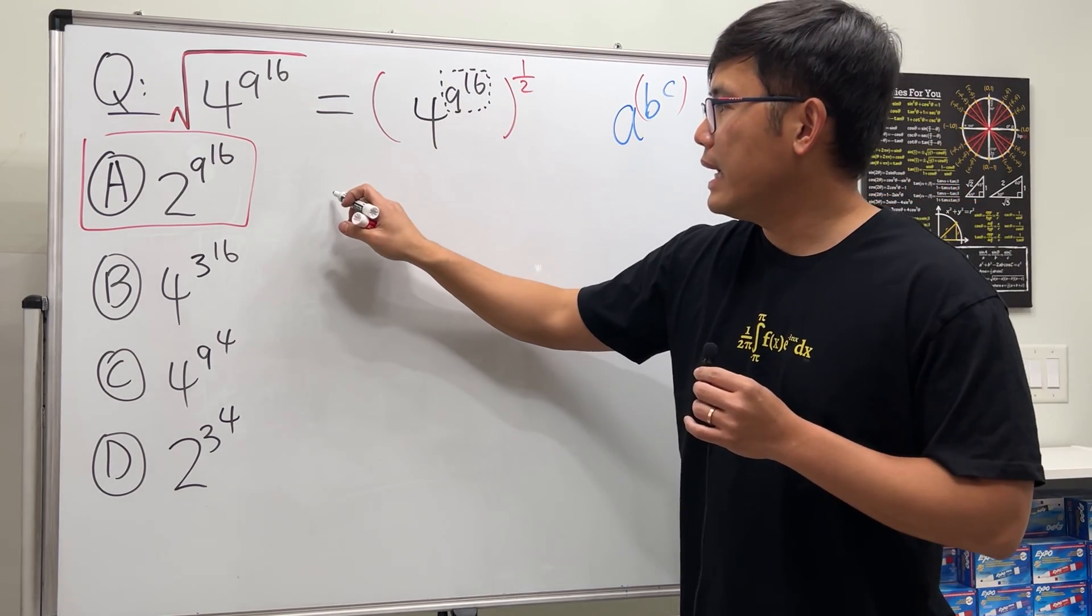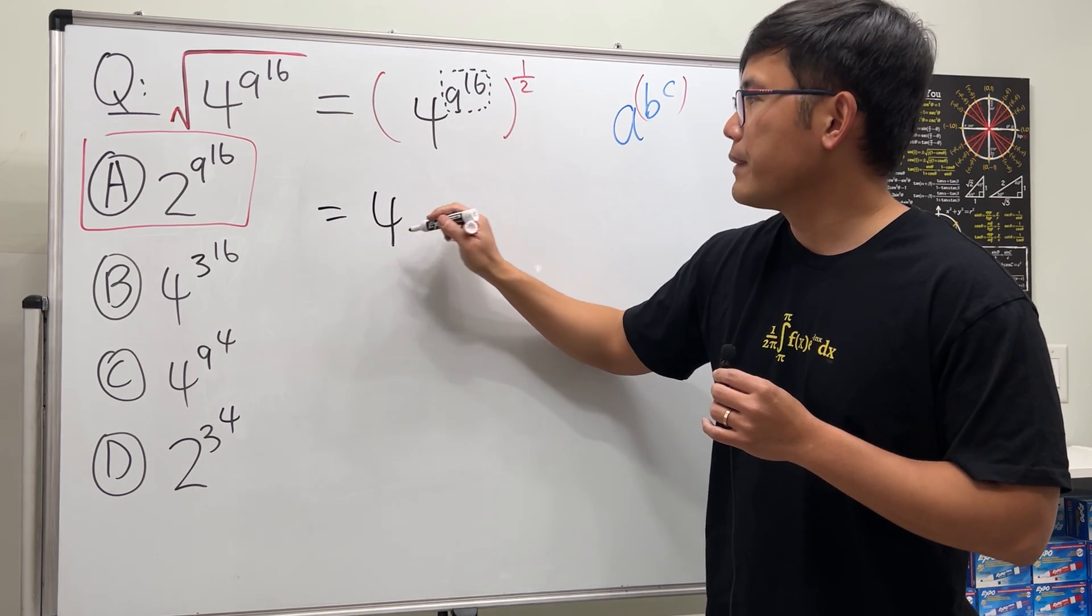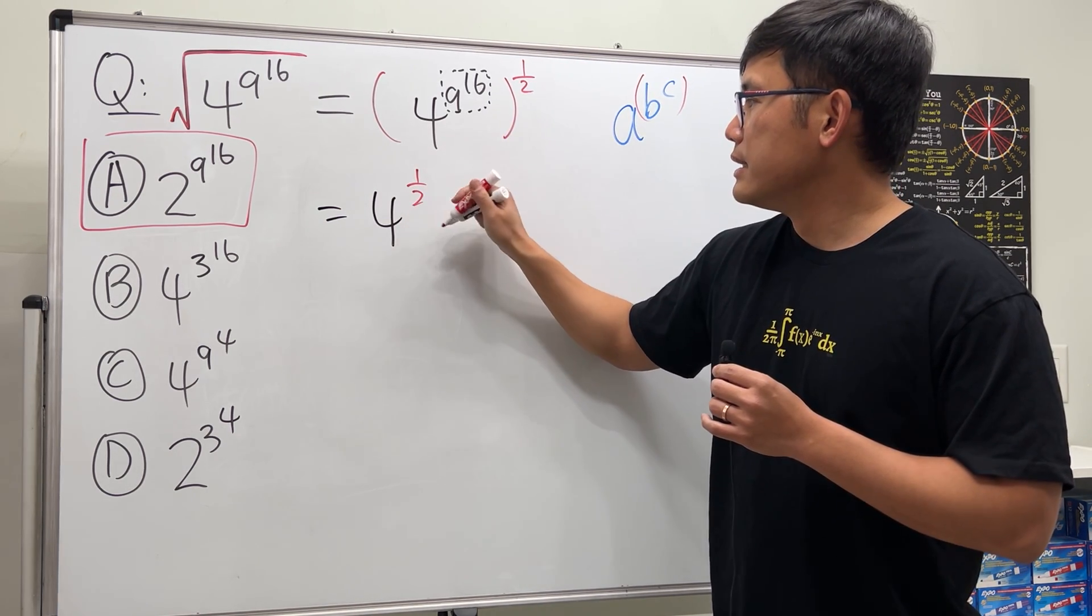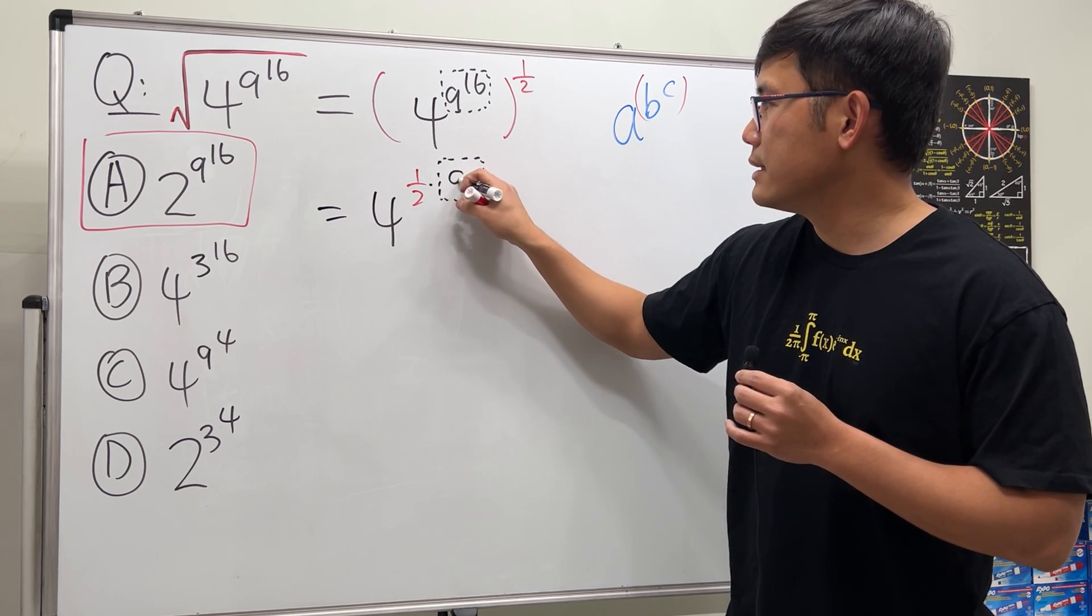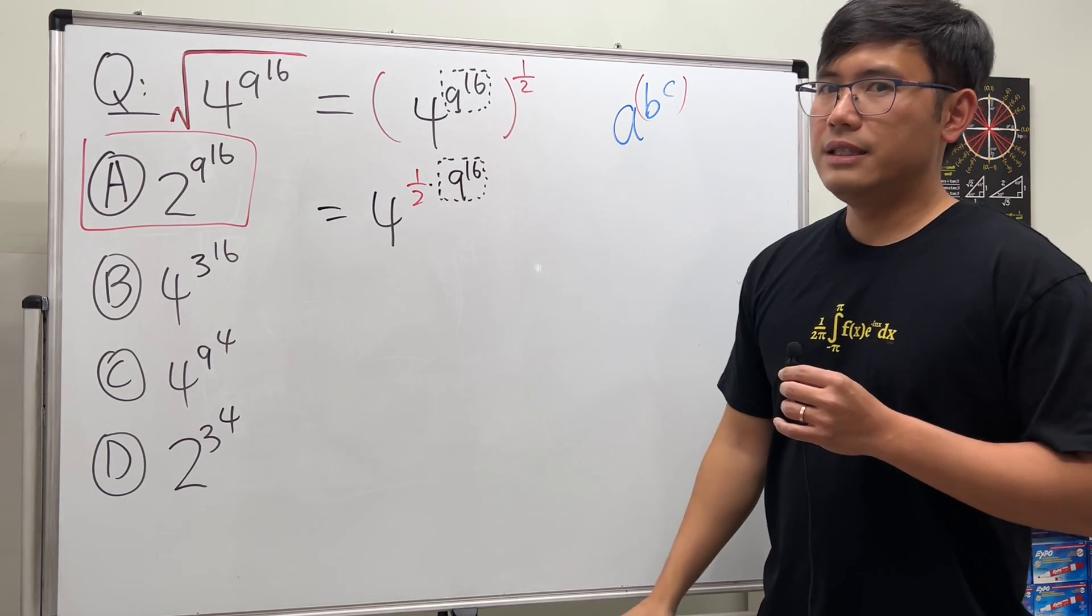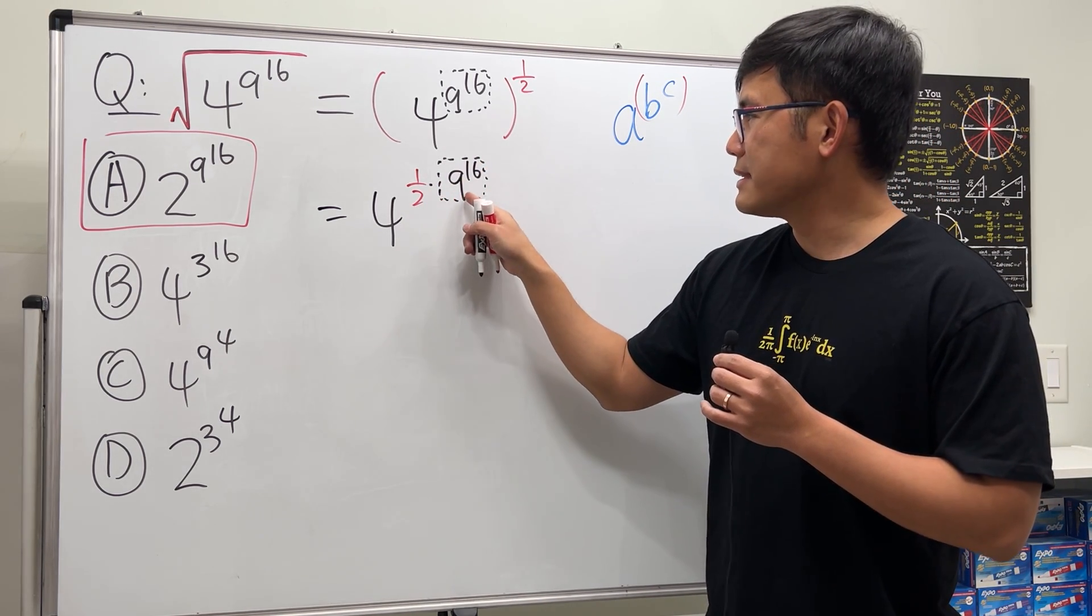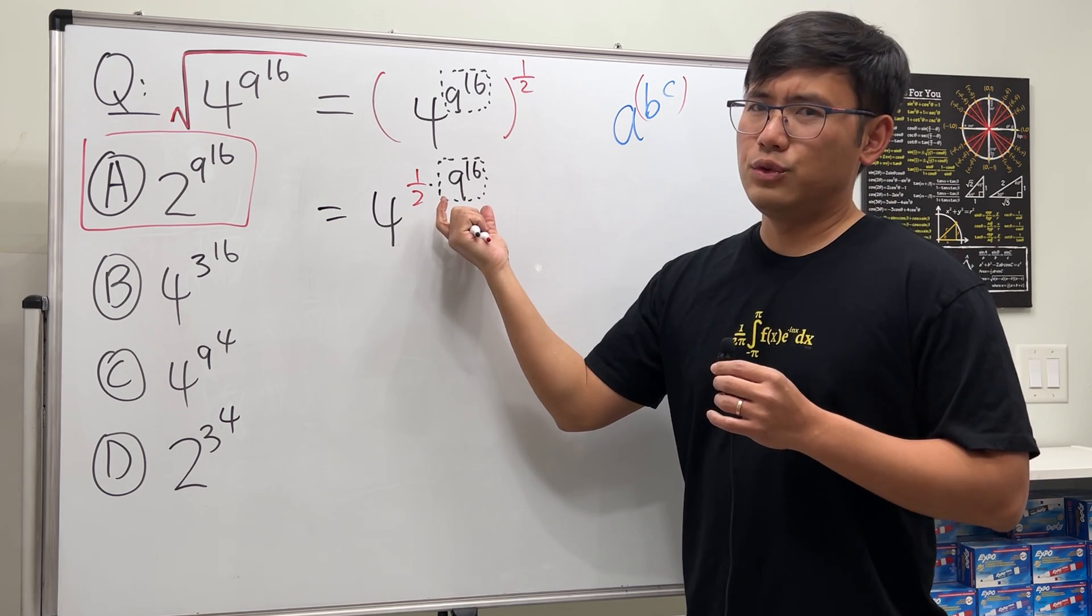And unfortunately, if we do one-half times 9 to the 16th power, there's nothing too much you can simplify. So we do the other way. Right here, I'm just going to do 4 to the one-half power first and then raise to that power.